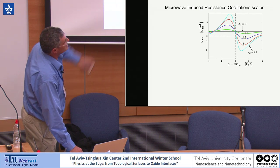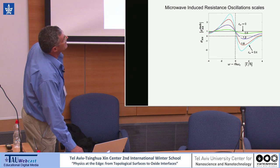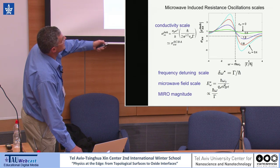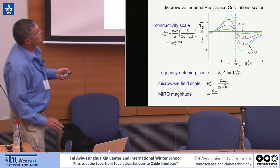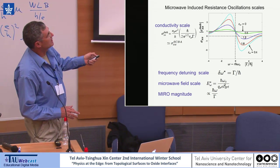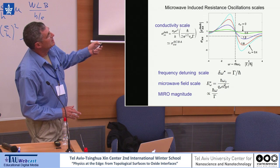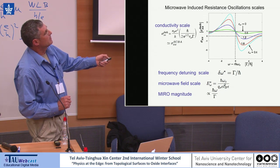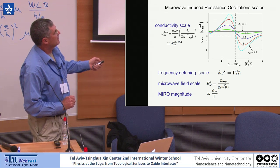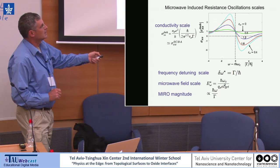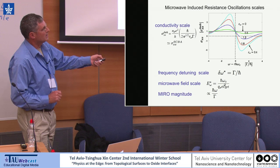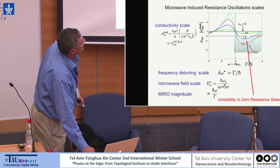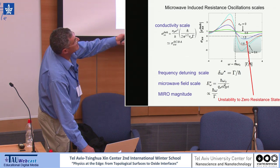The Floquet-Kubo results give us the value of the dark conductivity and the value of the oscillations. The characteristic energy scale for these oscillations is the Landau-level broadening from the long-range disorder, and the magnitude is the ratio of the microwave frequency to the Landau-level broadening. This negative conductivity part is very interesting in its own right.